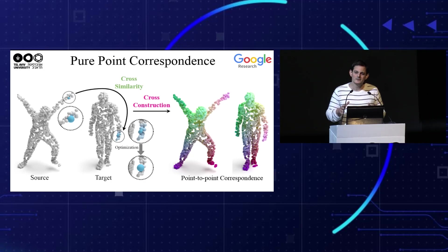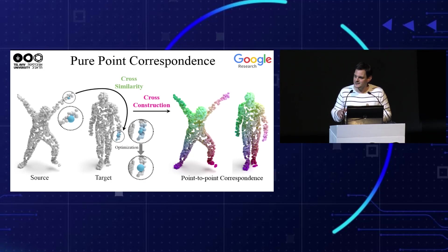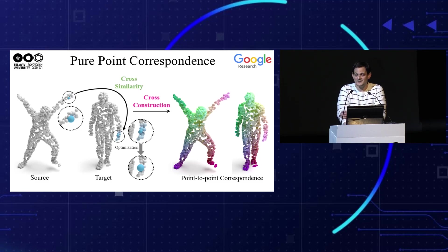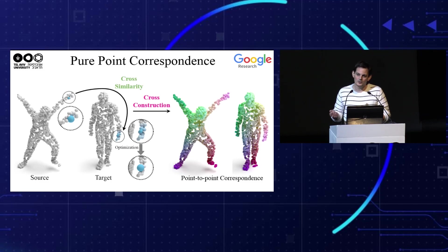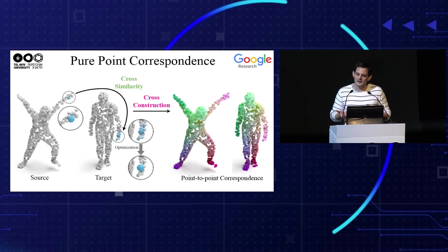The only thing that is learned in this system is the point feature representation. And since this is the only thing needed for computing correspondence, we regard it as pure point correspondence.